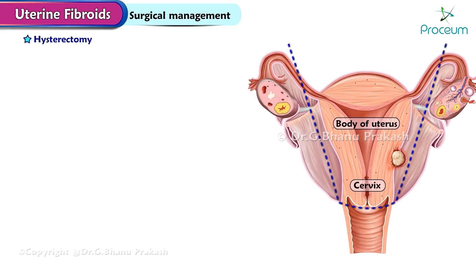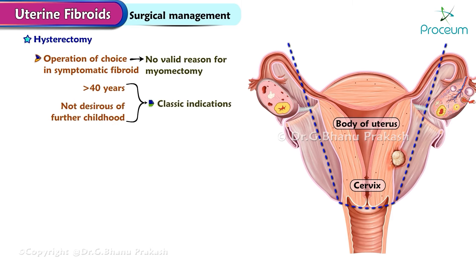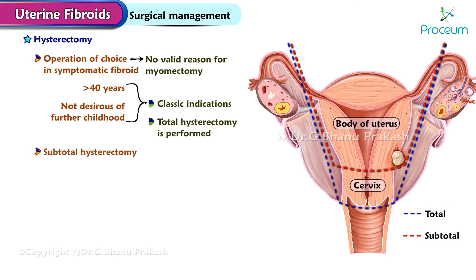Hysterectomy is the operation of choice in symptomatic fibroid when there is no valid reason for myomectomy. Patients over the age of 40 years and those not desirous of further children are the classic indications. A total hysterectomy is performed; however, a subtotal hysterectomy may have to be done in a few conditions.